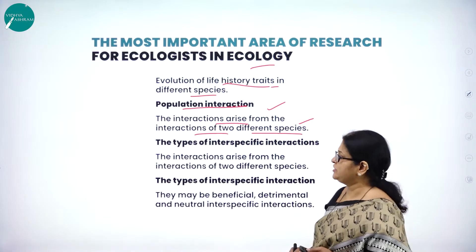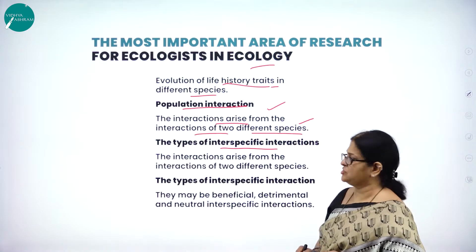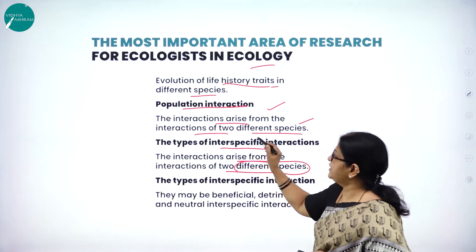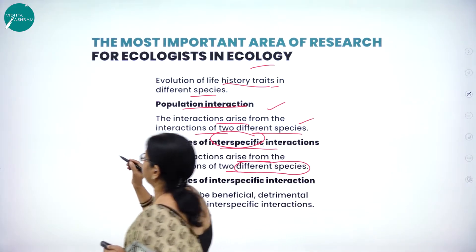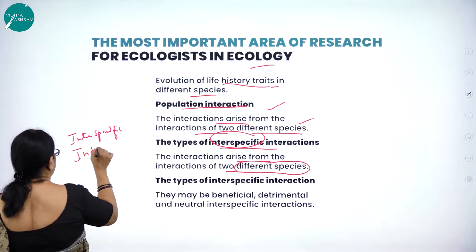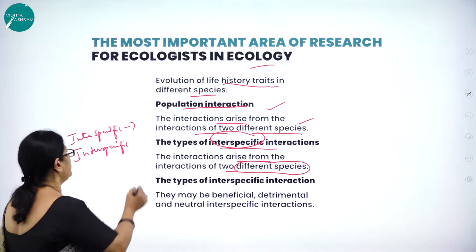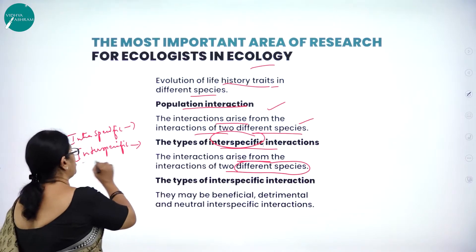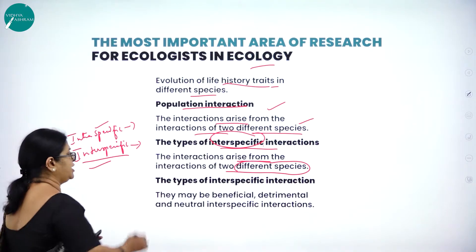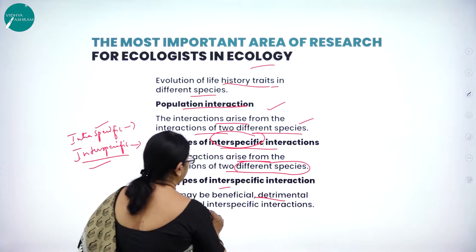What are the types of population interactions? There are two types. One is called interspecific interaction and the other is called intraspecific interaction. Interspecific refers to interactions between two different species, while intraspecific refers to interactions between members of the same species. These intraspecific interactions may be beneficial, detrimental, or neutral.